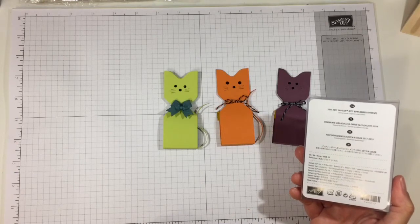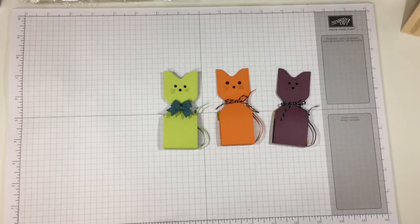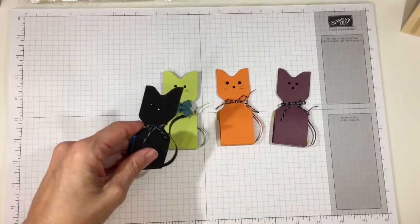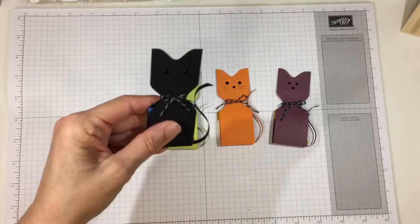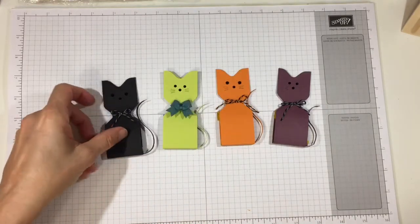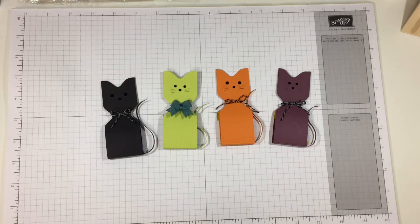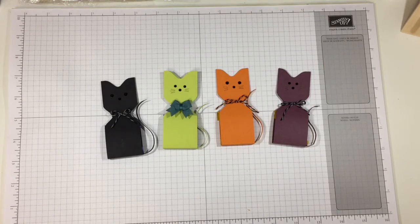But I also used on this one the little bitty bows, and if you have some leftover the 2017-19 bitty bow embellishments, they make really fun bows for them as well. And the last one that I did was a really spooky black one. I don't know if you can see his sparkly rhinestone eyes and nose, but he looks very regal and he looks like he'd be crossing your path on Halloween night.